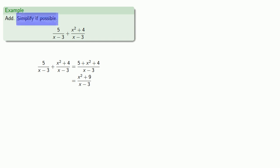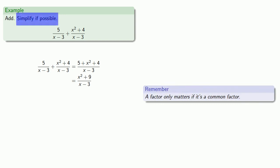We could try to simplify. So remember, a factor only matters if it's a common factor. And so the only simplification that's going to be possible is if our numerator has a factor of x minus 3. And so we can check to see if x minus 3 is a factor of the numerator.